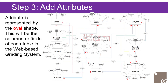Course entity has the following attributes: Course ID — Primary Key, represented with underline. Name. Description. Year Level entity has the following attributes: Year Level ID — Primary Key, represented with underline. Year Level.